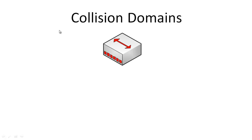A collision domain is the part of the network in which you can experience a collision. For instance, if you have a network and two devices are connected together using a cable, they can send messages to one another — one after the other in half duplex, or at the same time in full duplex. But if you need to connect three devices together, you could use a device called a hub, connecting each device to a port on the hub.